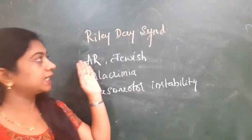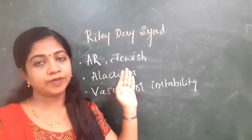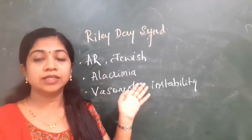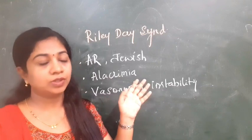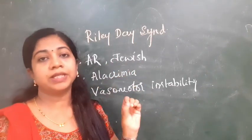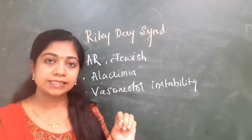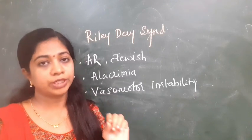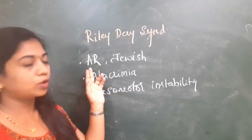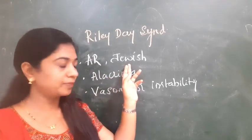Coming to Riley-Day syndrome, frequently asked in MCQ questions. Riley-Day syndrome is also called familial dysautonomia or hereditary sensory and autonomic neuropathy type 3. It is autosomal recessive in character and mostly seen in people of Jewish descent.